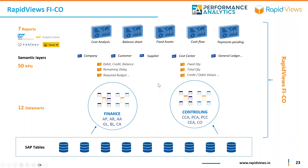As one example of what is behind the business content, using the FICO module: for Finance and Controlling, we deliver 12 data marts, 50 KPIs, the full semantic layer, and in this case seven sample reports — cost analysis, balance sheet, fixed assets, cash flow, and payments pending. We're going to share with you the full deck of slides so you'll also see more details on the other SAP modules.